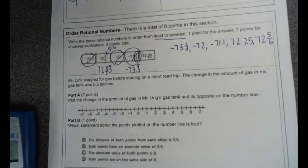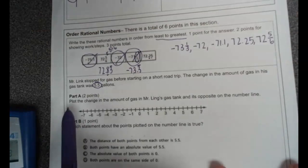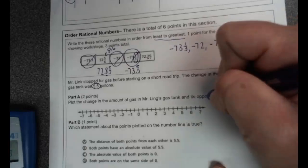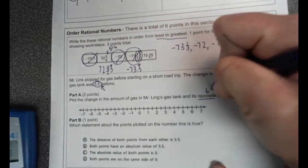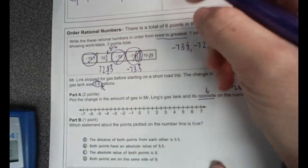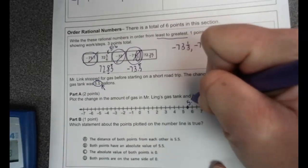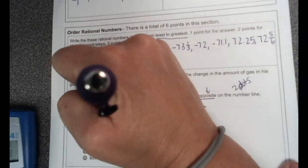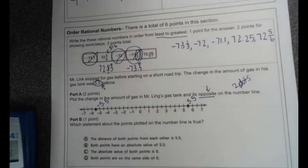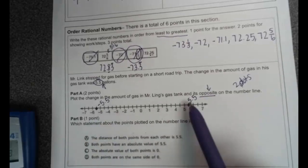And our last one. Mr. Link stopped for gas before starting on a short road trip. The change in the amount of gas in his gas tank is 5.5. Plot the change in the amount of gas in Mr. Ling's gas tank and it's opposite. So we're plotting that and its opposite, so we should have two dots here. 5.5 would be right here, and then the opposite of 5.5 is negative 5.5. And which statement about the plots pointed on the number line is true? The distance of both points from each other is 5.5. So that's saying from here to here is 5.5. That is not correct. That's more than 5.5.